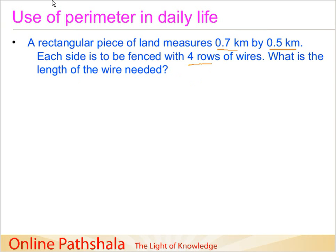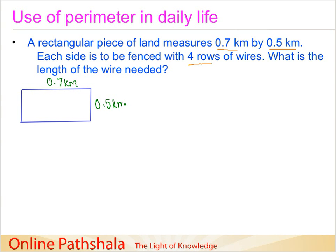The first thing we can do is make a rectangle, so that will make our task of visualizing the shape easier. We have roughly this rectangle here, and let us label the sides. The two sides are 0.7 km, which is the longer side, and 0.5 km, which is the shorter side. We have to fence this field and go around it 4 times because we need 4 rows of wires.